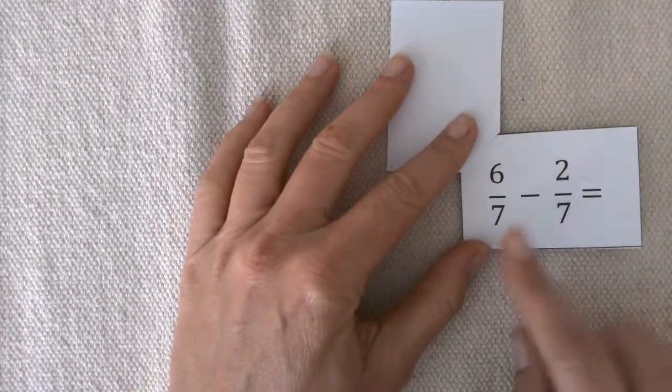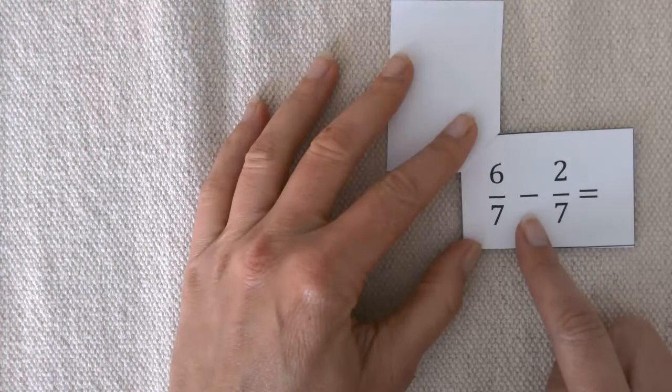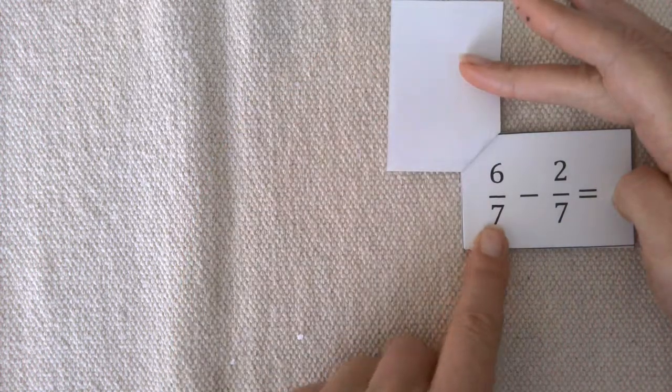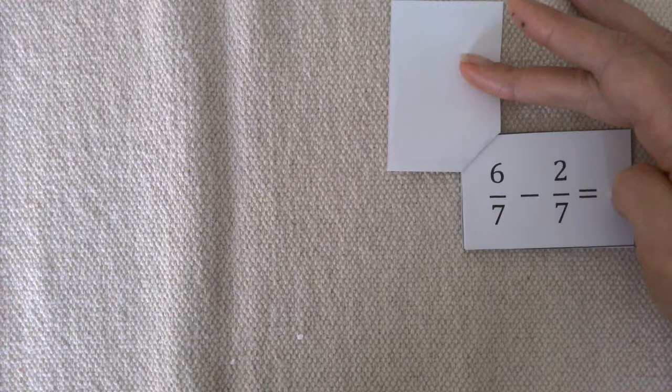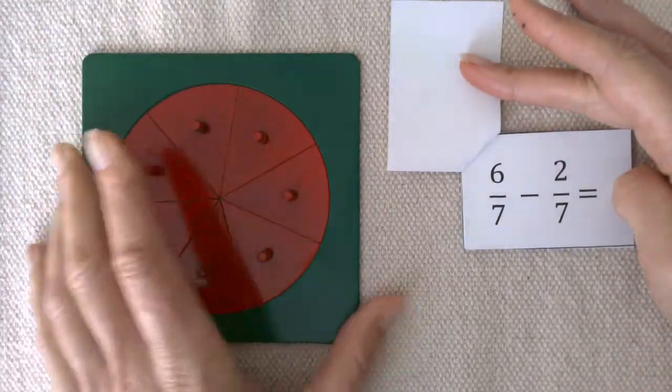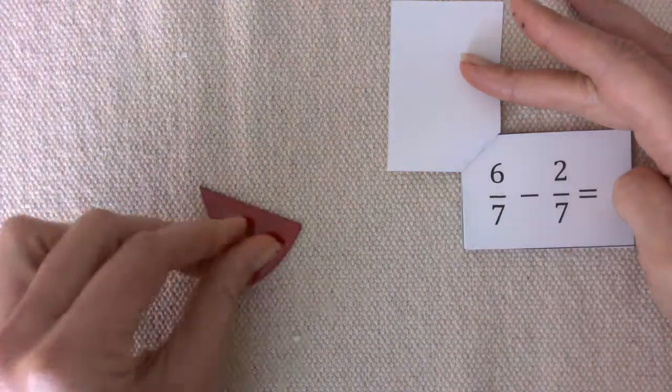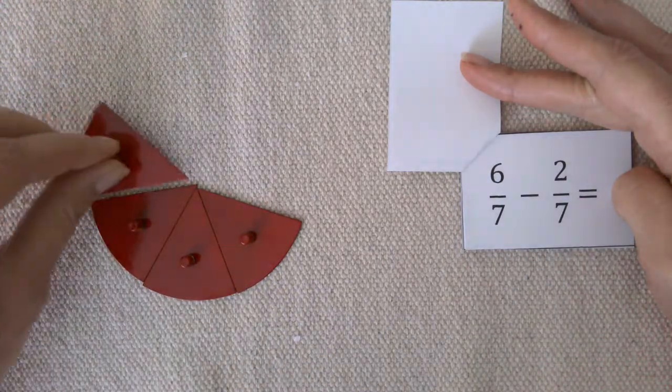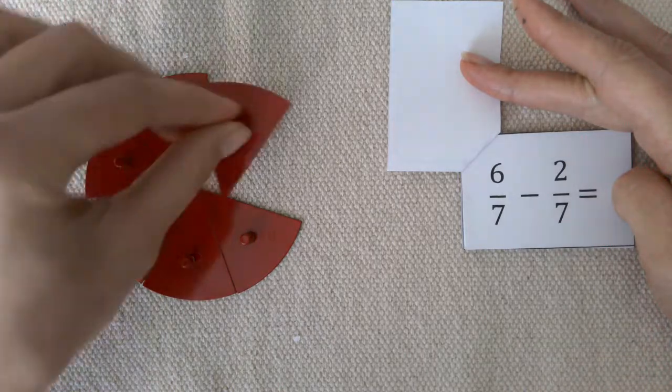Let's look at our first example. Here we have 6 7ths minus 2 7ths. So let's build our first fraction. I have all of my 7ths here, and I need 6 of them. 1, 2, 3, 4, 5, 6.